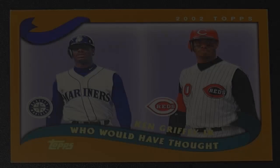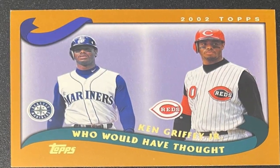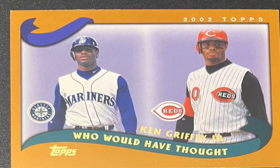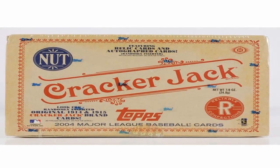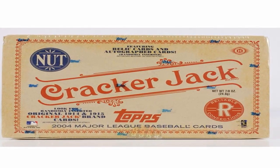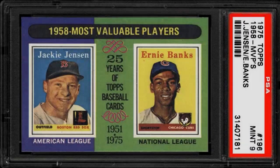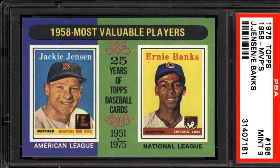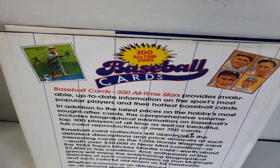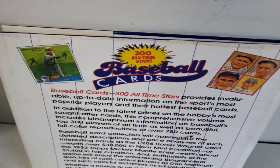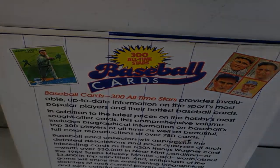Beckett produces annual baseball card price guides that are available both in print and online. Their guides provide average sold prices for cards in different grades of condition from poor to mint. PSA is the leading service for grading the condition and authenticity of cards on a 1 to 10 scale. On their website you can look up population reports showing how many of a certain card have been graded at each level.